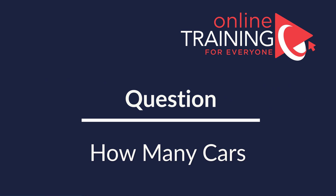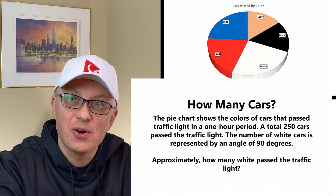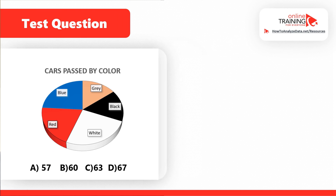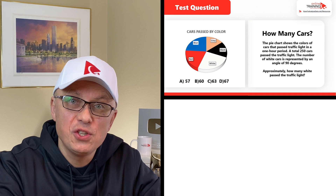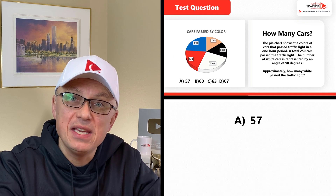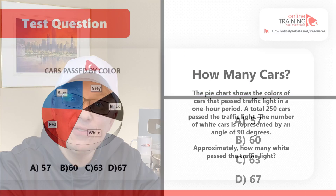A lot of times you get tested on your ability to analyze charts and graphs. In this question, we see a pie chart broken down into parts shown in different colors: white, red, blue, gray, and black. The question states: the pie chart shows the colors of cars that passed a traffic light in a one-hour period. A total of 250 cars passed. The number of white cars is represented by an angle of 90 degrees. Approximately how many white cars passed? Choices: A) 57, B) 60, C) 63, D) 67.